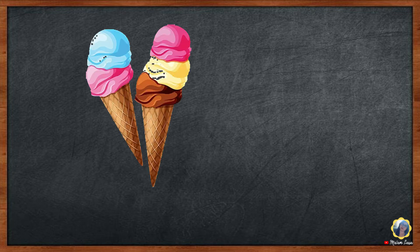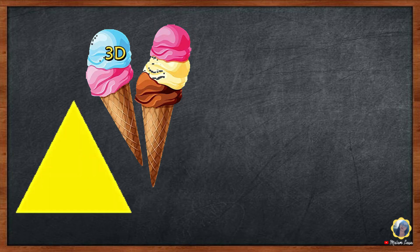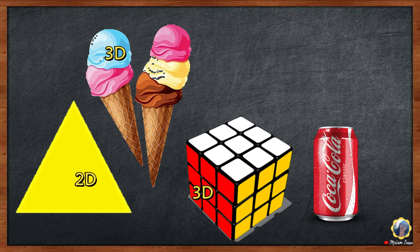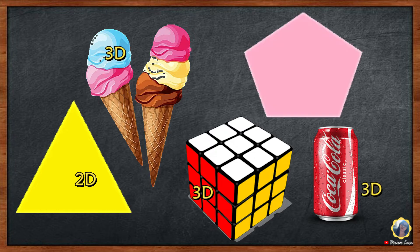Let us practice identifying the following objects whether it is 2D or 3D. Ice cream cone: 3D. Triangle: 2D. Rubik's cube: 3D. Cooking can: 3D. Pentagon: 2D. Very good!